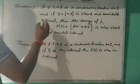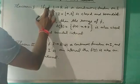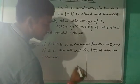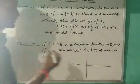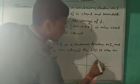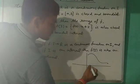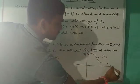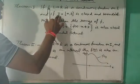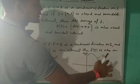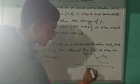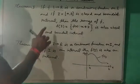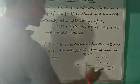Suppose we have a function f: I → R. Graphically, we can understand it — suppose this is a function f(x) and this is the graph of f(x). This is a continuous function on an interval — the closed interval [a, b]. This is a closed and bounded interval.